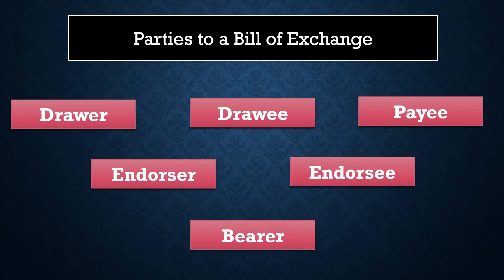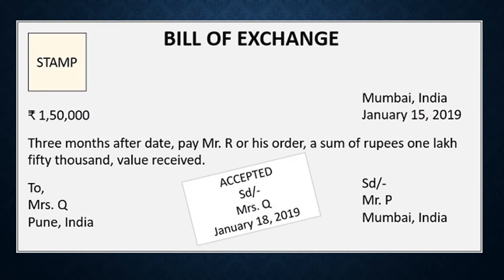These six people are the parties to a bill of exchange. This is a specimen of bill of exchange. You can see at the top right corner of this document the place and date is clearly mentioned. The revenue stamp is affixed. The rupee symbol is there — the amount should be mentioned in Indian currency. Rupee 1,50,000 is clearly mentioned.